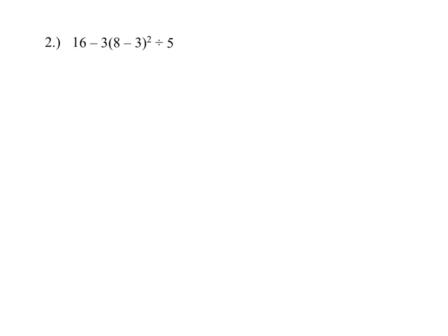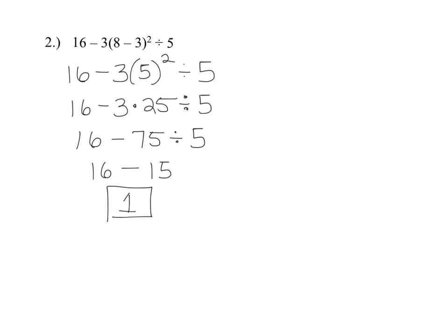The next problem looks simpler. Stop the video, give it a try working one step at a time going down, then come back to check. If you did it correctly, you should have gotten 1 as your answer. The first thing I did was what was inside the grouping symbols, which gave me 5. Then I did my exponents: 5 squared is 25. Then multiplication and division in order — 3 times 25 is 75, then 75 divided by 5 is 15. Finally, 16 minus 15 gives 1.